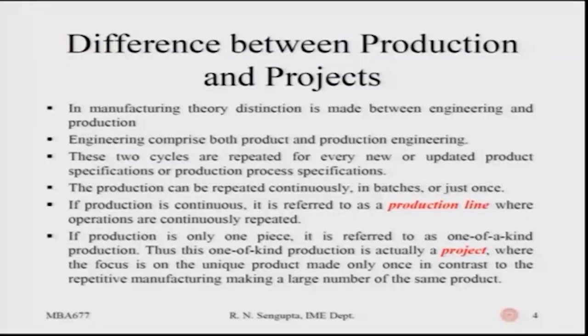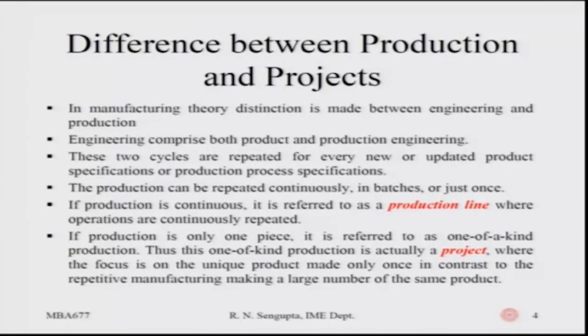Production can be repeated continuously, in batches, or done just once. The concept of 'once' — when you do a big project that will not be repeated again — is where we bring in the concept of project management. In production, if it is continuous it is referred to as a production line, and continuous repeated operations would not fall under project management. There is only one flow, on a standalone basis, done only once — hence the concept of project management comes into the picture.